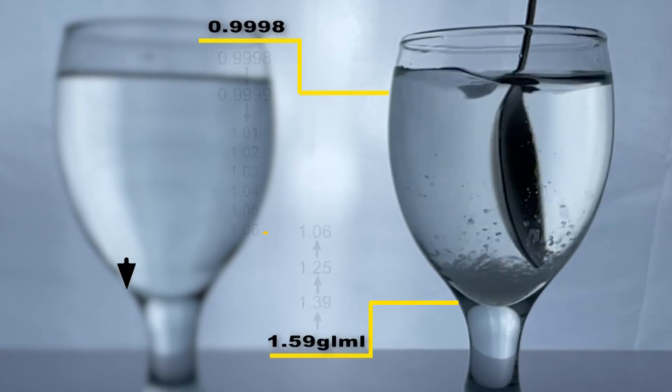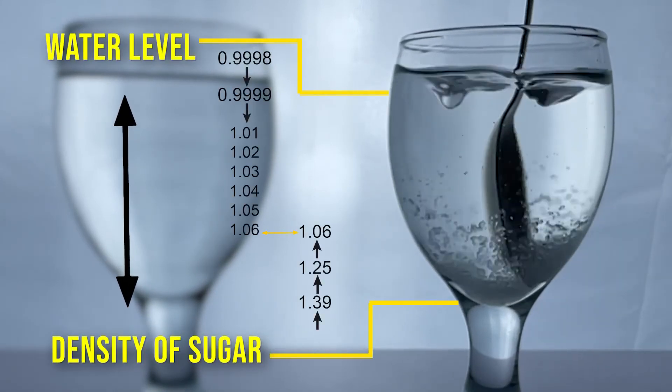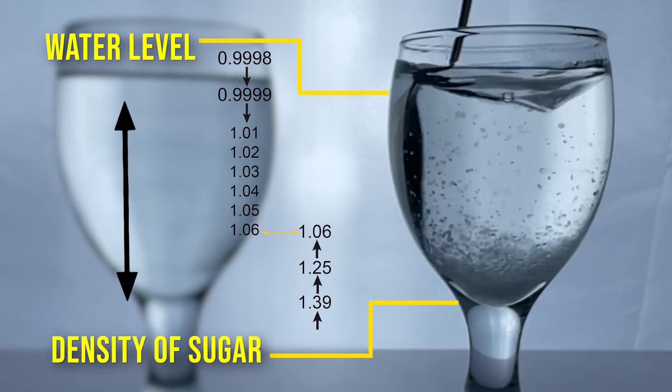When you mix sugar with water, the sugar molecules occupy the space between the water molecules, making the solution more tightly packed, or we can say it makes it more denser.